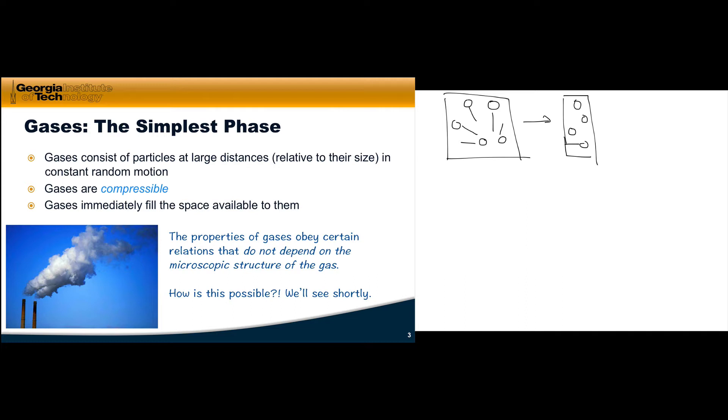One thing noticed early in the study of gases is that the properties of many gases obey certain relations that don't depend on the microscopic structure of the gas, which from a chemical perspective is pretty remarkable. The notion that a gas like CH4 with one carbon and four hydrogen atoms could behave like H2O, which has an oxygen and two hydrogen atoms, is remarkable.